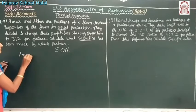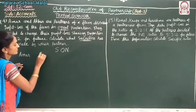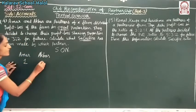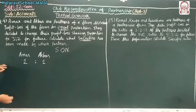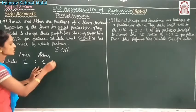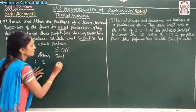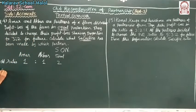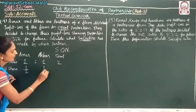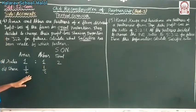Amar's old ratio is in equal proportion, which is 1 is to 1. Its total is 2. So the old share is 1 upon 2 and 1 upon 2. We have to divide it and make the shares.